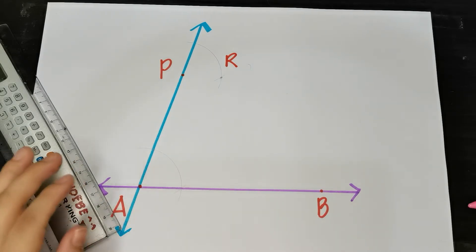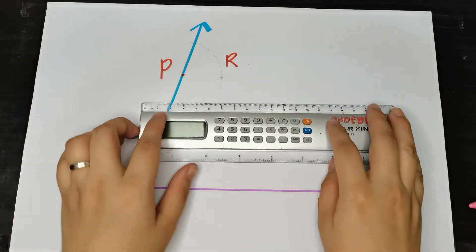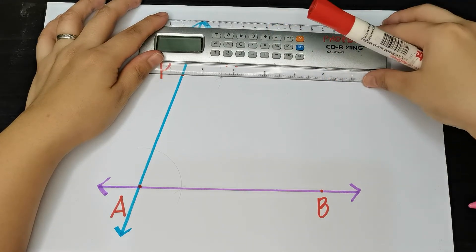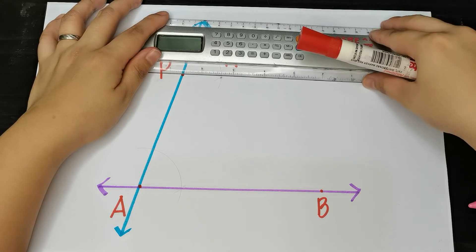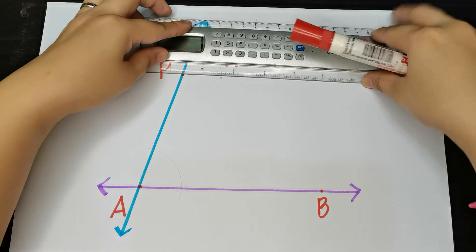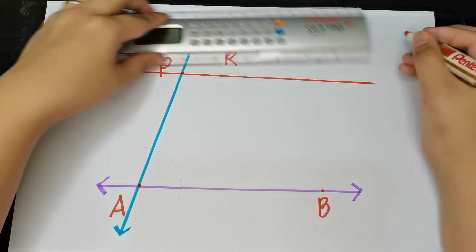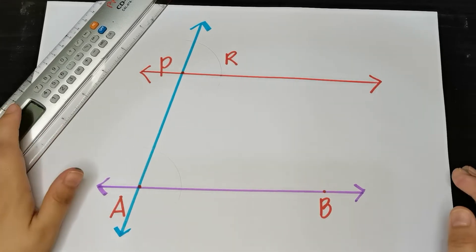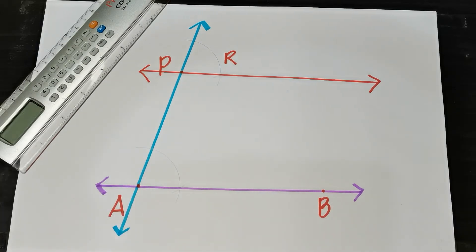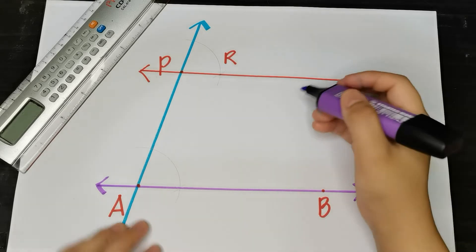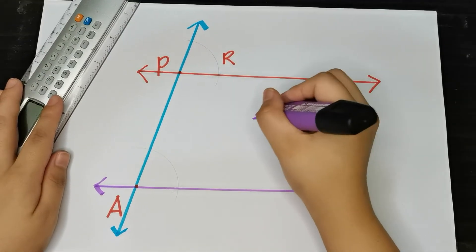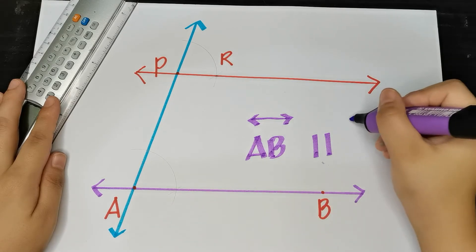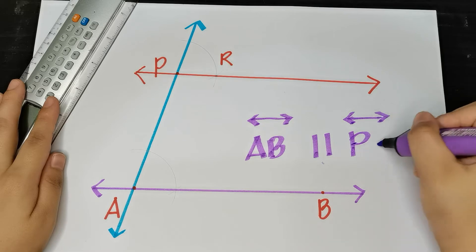And then connect them using your straight edge and pencil or color pencil — it's up to you. Once connected, you now clearly have two lines that are parallel with each other. We now have line AB, and remember our symbol for parallel — that is already parallel to line PR.